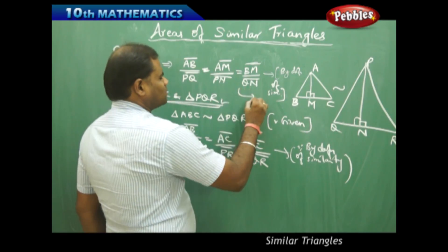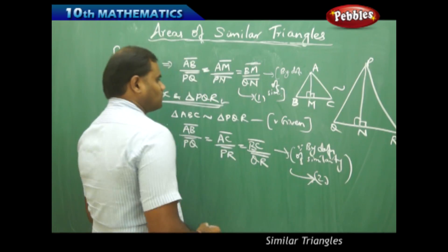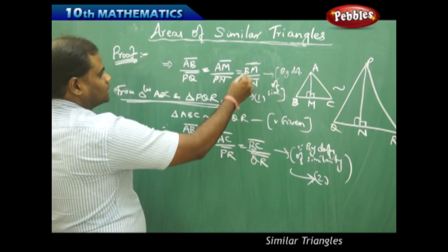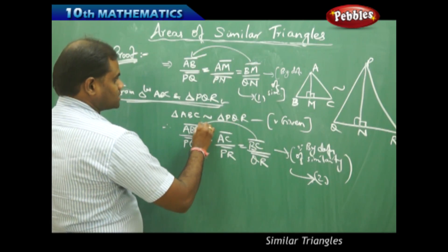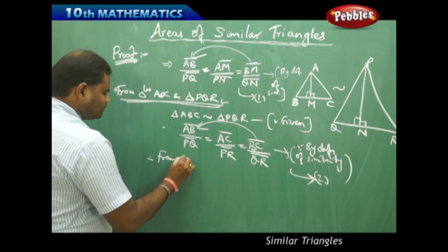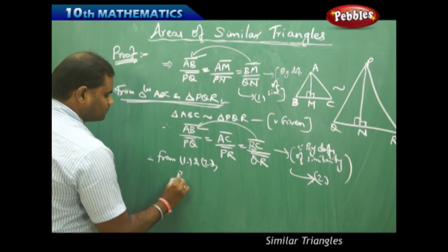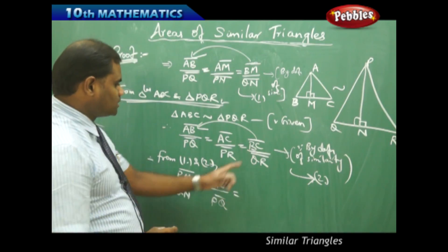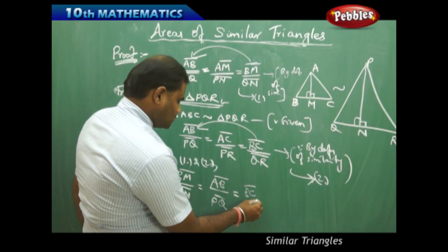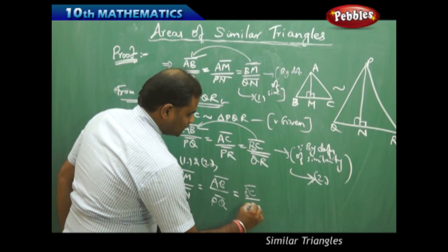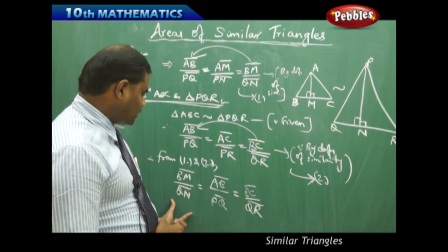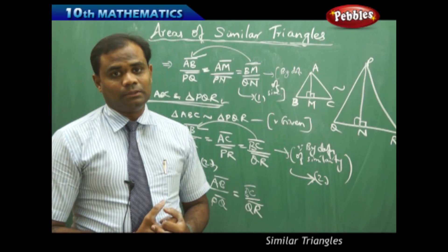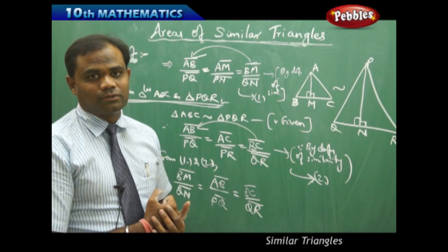Comparing equation 1 and equation 2, we see that AB/PQ appears in both. From equations 1 and 2, BM/QN = AB/PQ and BC/QR = AB/PQ. Therefore BM/QN = BC/QR = AB/PQ. We substitute this back into the ratio of areas obtained in equation 1.